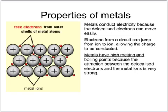Metals conduct electricity because these delocalized electrons can move easily from ion to ion and carry electricity. If electrons from a wire arrive from one end, they hop onto a particular ion, and electrons jump one after another all the way through the metal and out through the other end. So metals are very good conductors of electricity because the delocalized electrons are able to move easily and flow.